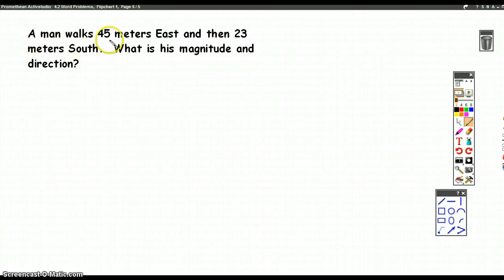So in our example here, it says a man walks 45 meters east and then 23 meters south. So again, when you're doing these problems, just remember direction is very important. So being mindful of not just the math you do, but how you write your answer.